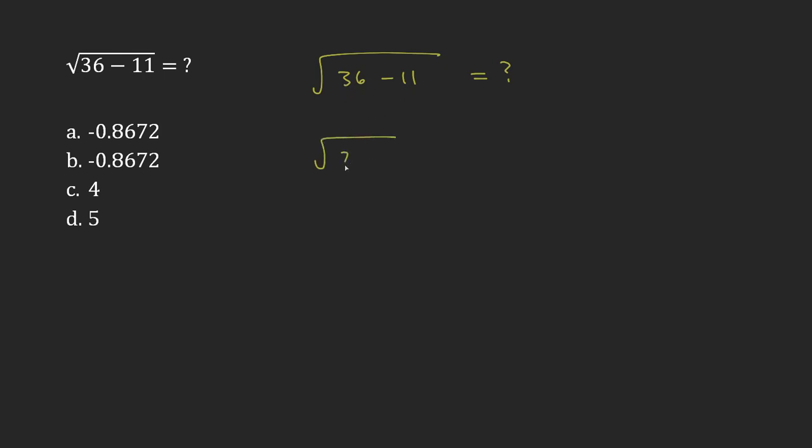36 minus 11, that becomes 25. And so now I'm just looking at what times what equals 25. What is the square root or what number multiplied by itself will give me an answer of 25.